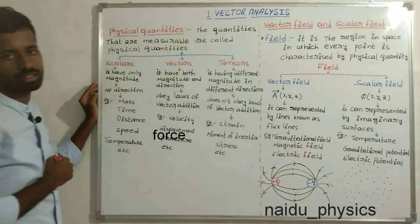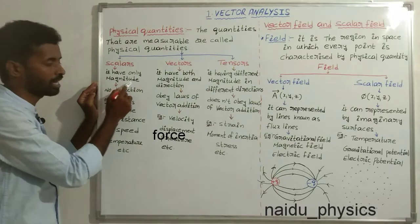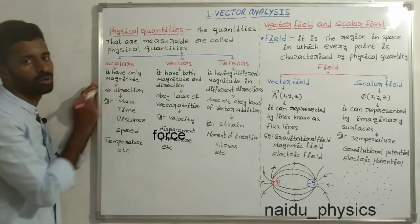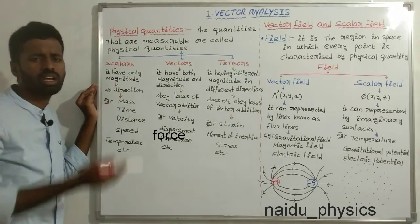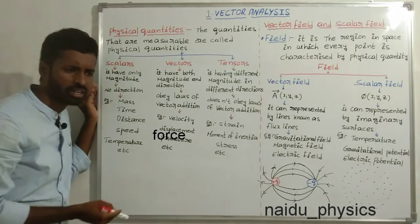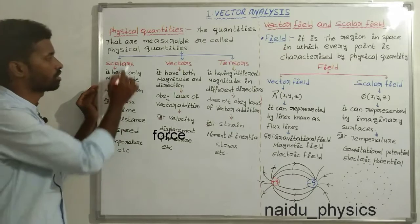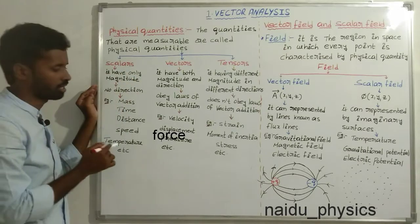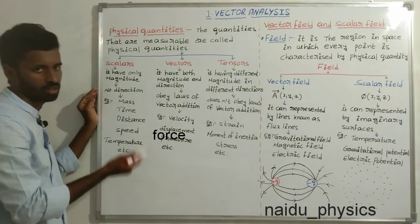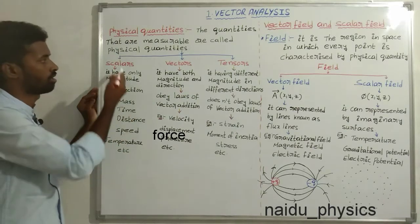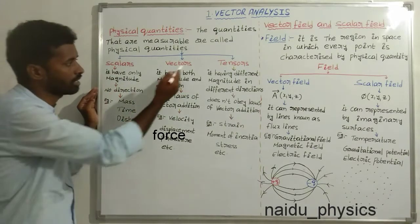What is a scalar? It has only magnitude, no direction. For example, mass — mass has only magnitude, no direction. That is why mass is a scalar quantity. Similarly, time, distance, speed, and temperature are also scalar quantities.